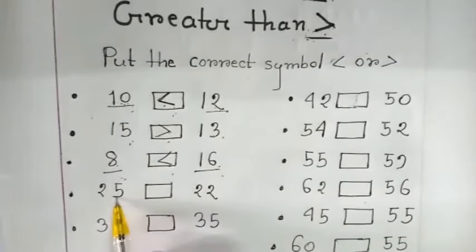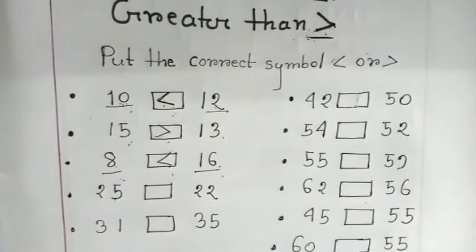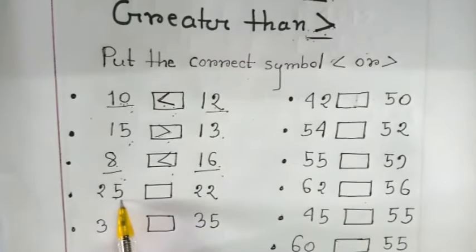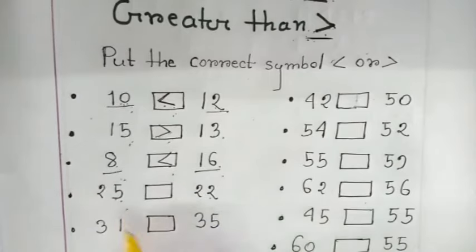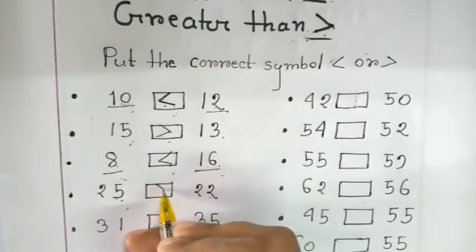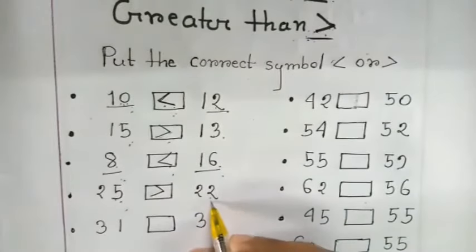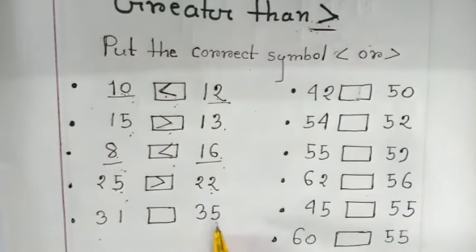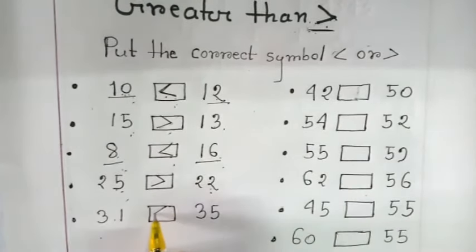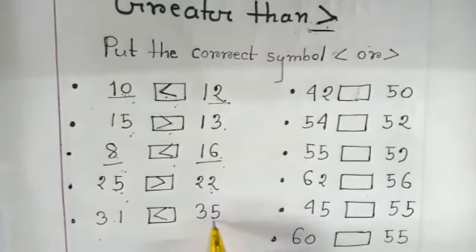25 is greater than 22. 25 greater than 22. 31, 35. 31 is smaller than 35.